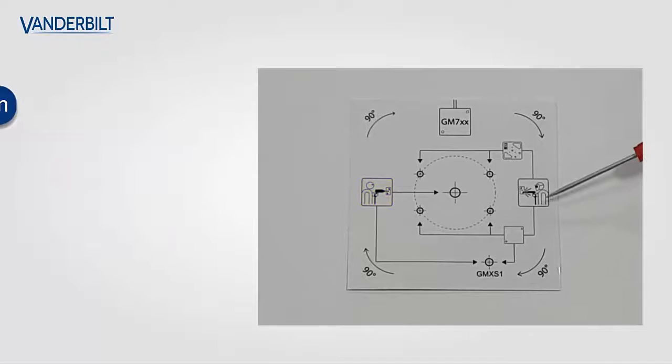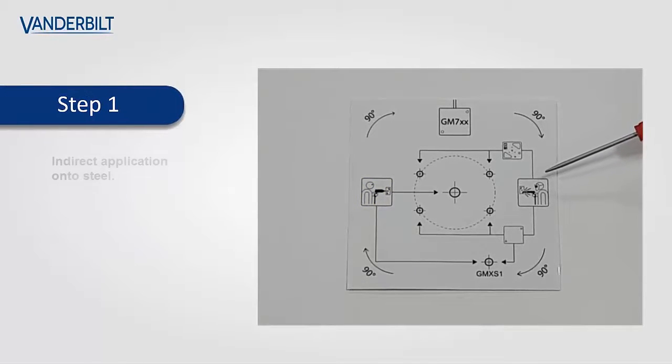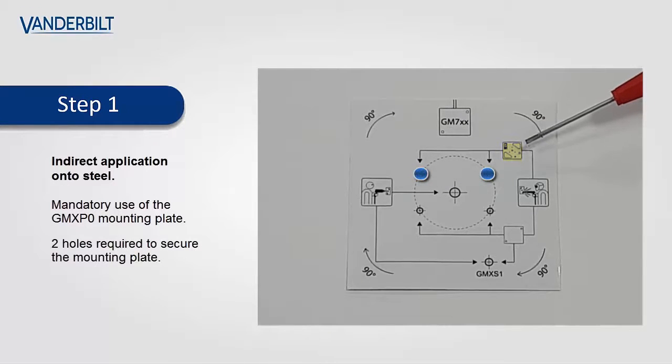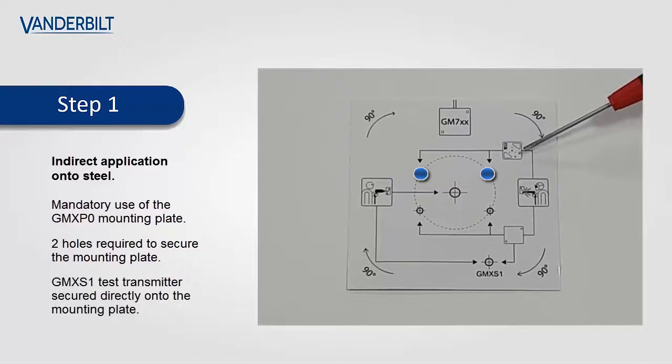For the weld symbol we can have indirect application to the steel surface. The indirect application is via a GMX-P0 mounting plate and here are the two mounting holes that are indicated to secure the plate to the steel surface. The GMX-S1 is directly mounted onto the mounting plate and therefore no additional holes are required.